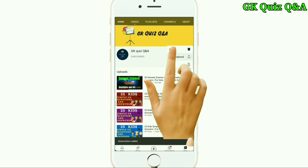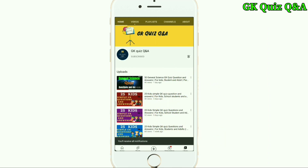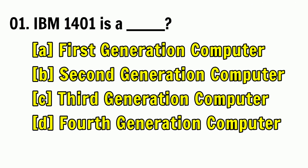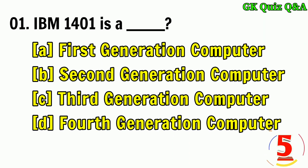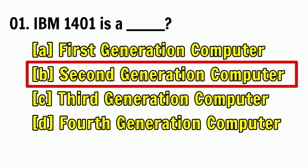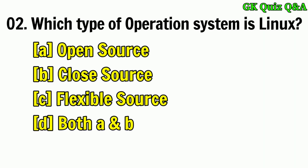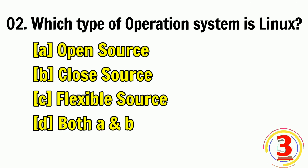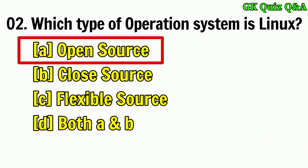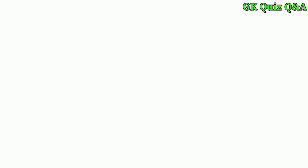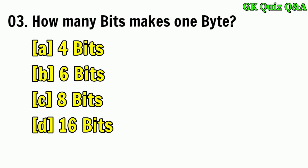IBM 1401 is — answer B — a second generation computer. Which type of operation is Linux? Answer: open source. How many bits make one byte?